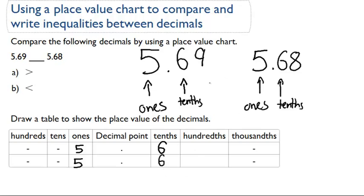Now we go to the hundredth place. The number in the hundredths place for 5.69 is a nine, and the number for the hundredths place in 5.68 is an eight.